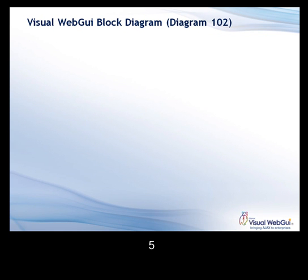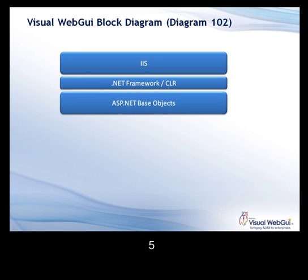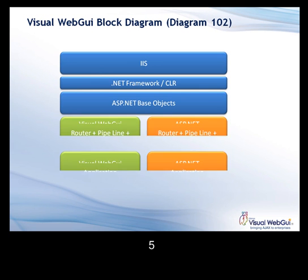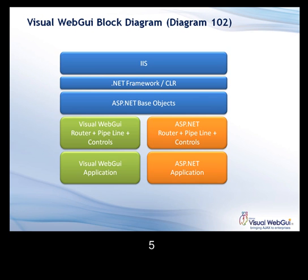If we look at a block diagram of Visual Web GUI's architecture, we see the first three blocks look familiar. We have IIS, the .NET Framework or CLR, and the ASP.NET base object. Visual Web GUI works atop ASP.NET and inherits from the ASP.NET base object. Then we see the Visual Web GUI router, pipeline, and controls — the Visual Web GUI application components — side-by-side with the ASP.NET router, pipeline controls, and application components. Visual Web GUI and ASP.NET continue to work side-by-side, and can even interoperate sharing the same context and base objects.